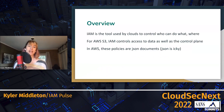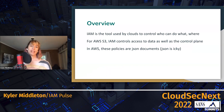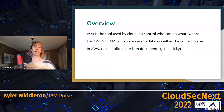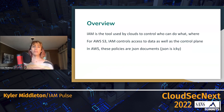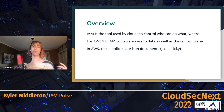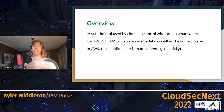Let's talk about what IAM is. IAM, or the Identity and Access Management Service, is the tool used by clouds to control who can do what, where. It's the service that when you authenticate to a cloud, you prove who you are — I'm Kyler and it says you're allowed to do these things. It sort of gatekeeps you on what you're allowed to do for all of your actions within the cloud, and in that way it is sort of the bread and butter of zero trust because it controls all of the services and actions within the cloud.